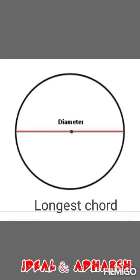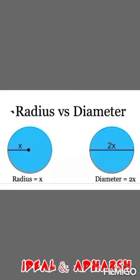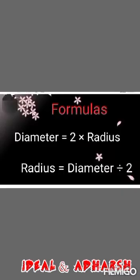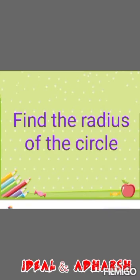Next we want to know the relationship between radius and diameter. If the radius is equal to x, then the diameter is equal to 2x. How can we identify the radius and diameter? We use the formulas: diameter is equal to 2 times radius, and radius is equal to diameter divided by 2.